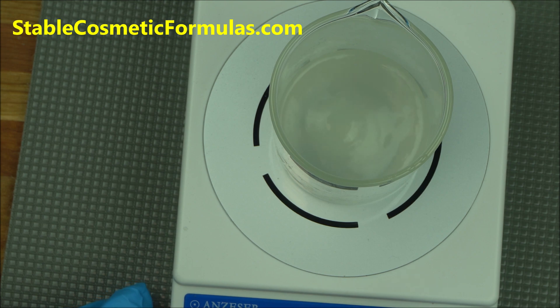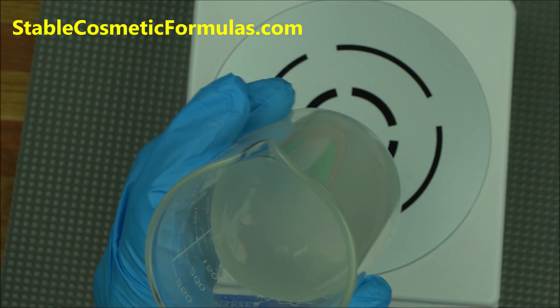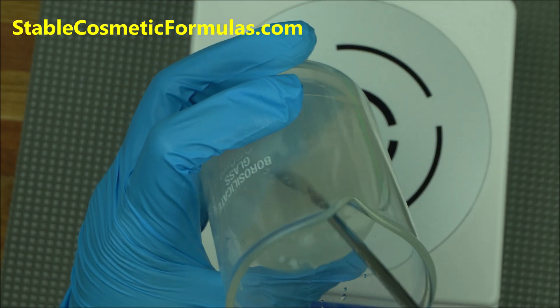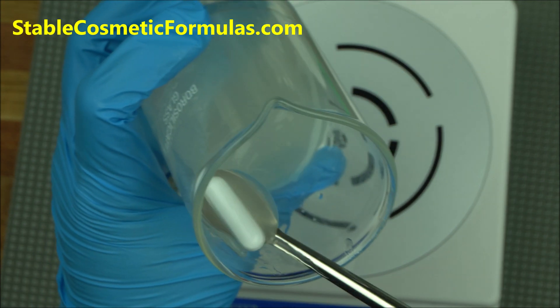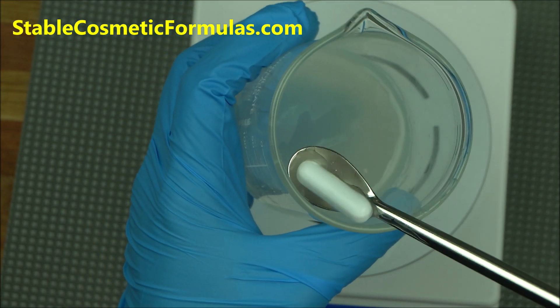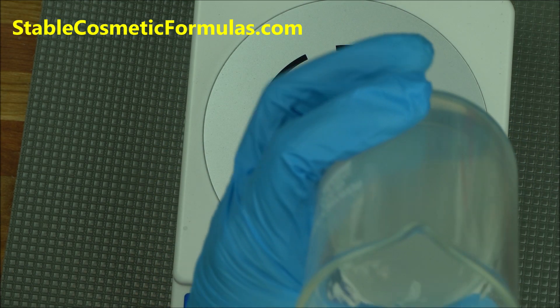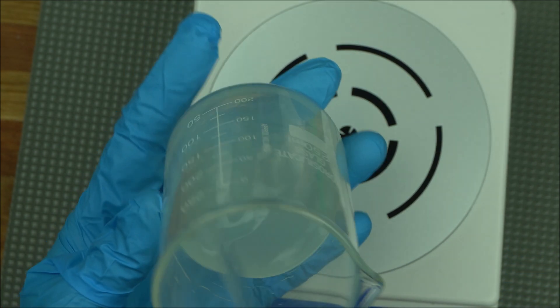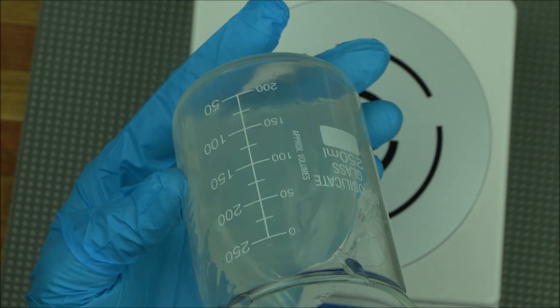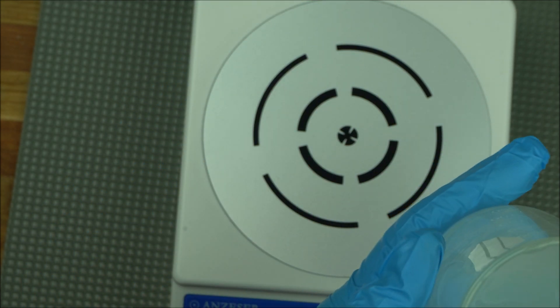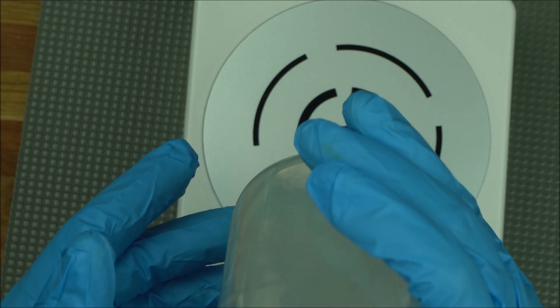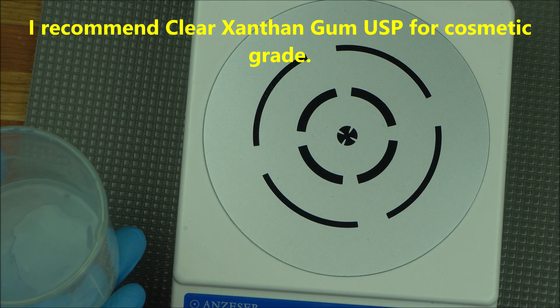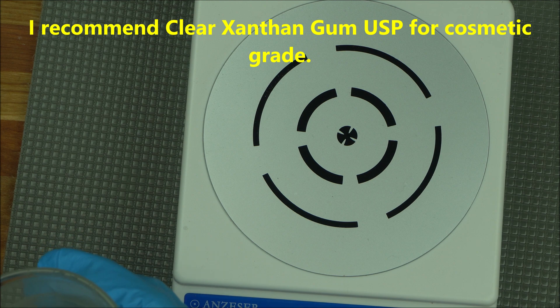The next thing you want to do is just remove your stir bar. Do not use your hand to remove it. Make sure you use something else to retrieve the stir bar. As you can see, this is amazing. This gel is so smooth and all together. It's the ideal gel to use to make your products, whether you're making a facial gel or anything. There's no hair in it because we use vortex technology.